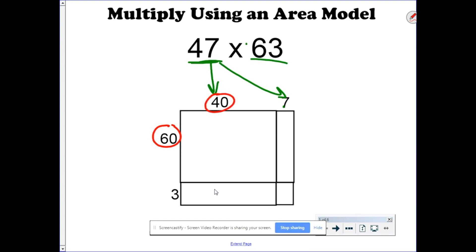Now why this makes this easier is because we're multiplying with zeros. Whenever you multiply with zeros, you can ignore the zeros, multiply, 6 times 4 is 24, and then tack the zeros back on. So 60 times 40 gives me 2,400.